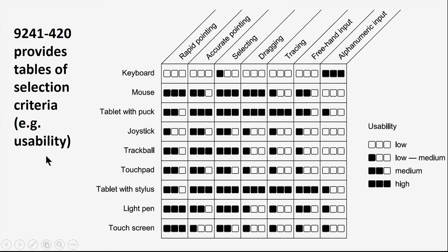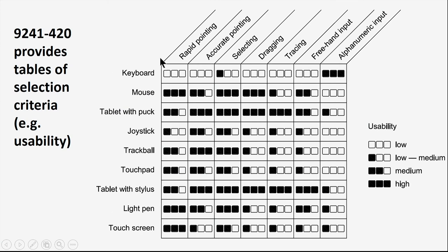This document contains a large number of useful tables. Here's a table for device selection criteria focusing on usability. Down the left-hand side are all devices of interest: keyboards, mice, tablets, joysticks, et cetera. Across the top are characteristics of interest: rapid pointing, accurate pointing, selecting, dragging, and so forth. A scoring system from low to high shows how many cells are darkened to indicate usability for each particular purpose. An important point: there is no best device overall — devices vary in how well they achieve particular tasks, which helps figure out which device to select for a given context.